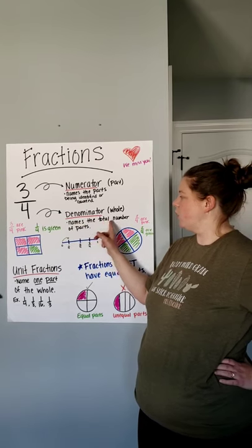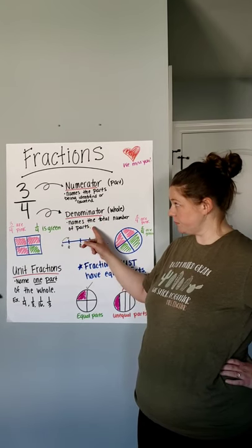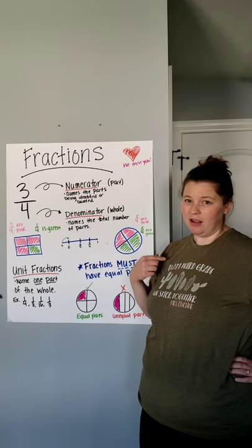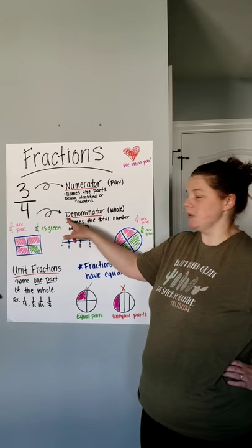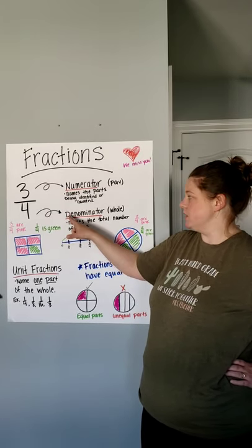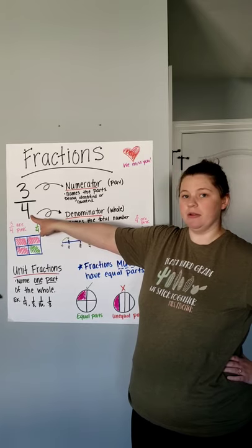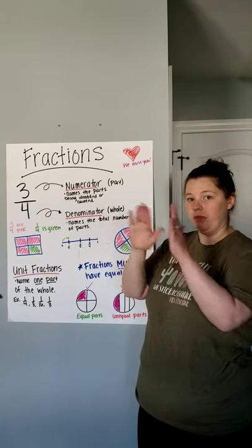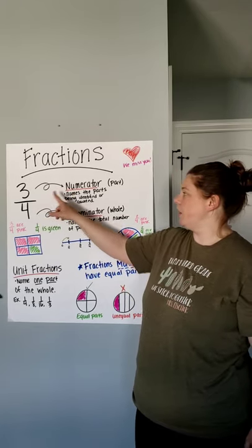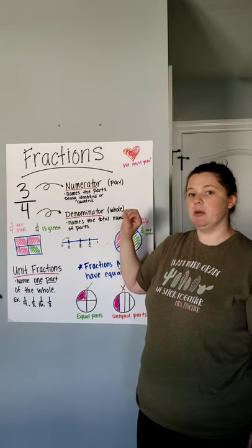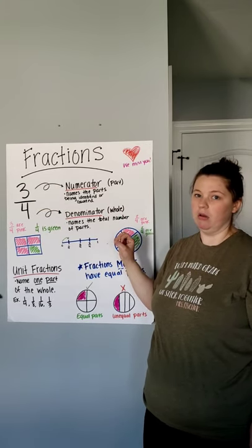So, it names the total number of parts, and the way that I always remember that is that denominator starts with a D, which is down. So, denominator goes down on the bottom, which is the whole thing, and then the numerator is on top, which is just the part that you're counting of the whole.